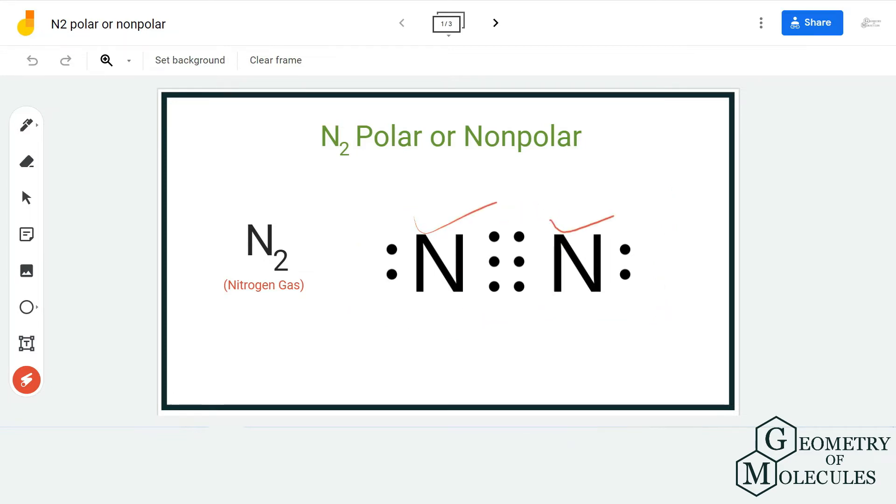There is one lone pair of electrons on both these nitrogen atoms. If you look at its structure, it is quite symmetrical as all the electrons are shared equally. There is no asymmetric distribution.